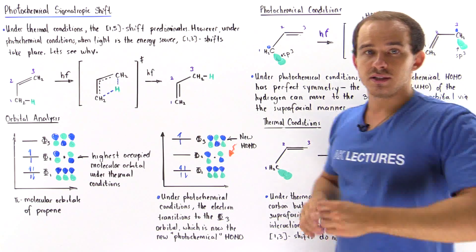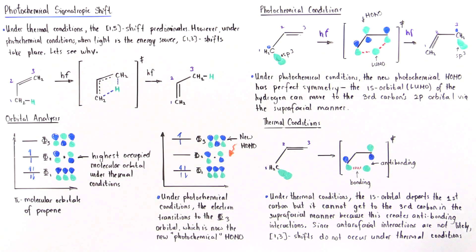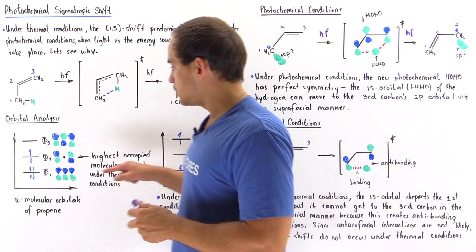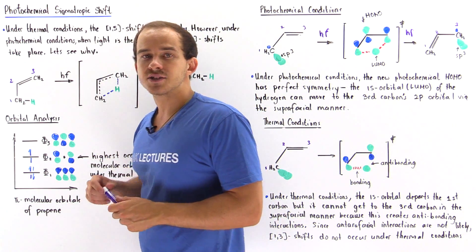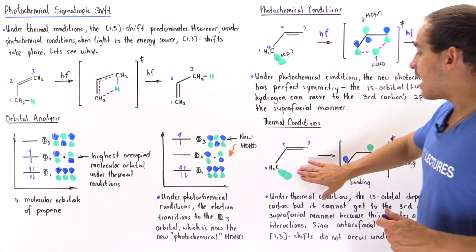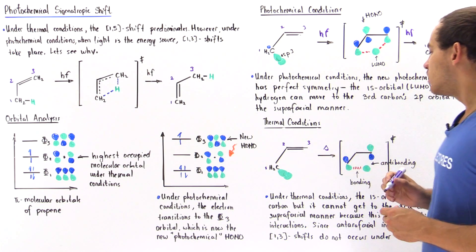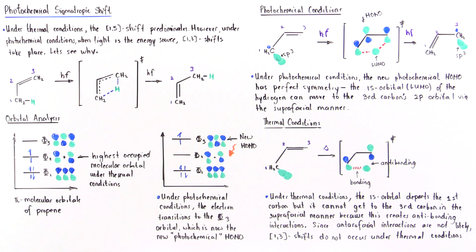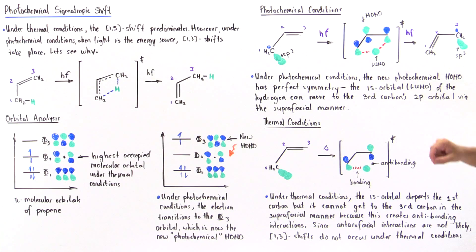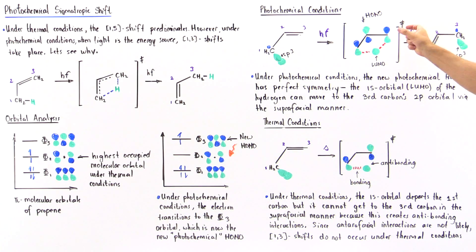Now what about thermal conditions? Why exactly doesn't this reaction take place under thermal conditions? Under thermal conditions it's the phi 2 orbital that acts as the highest occupied molecular orbital. So even though our reactant looks the same, the transition state will not look like this — the transition state will have a different orbital symmetry. This carbon will still have a blue and a green, but the second carbon will have a cancelled lobe, and the third carbon will be switched — the bottom will now be blue and the top will now be green.